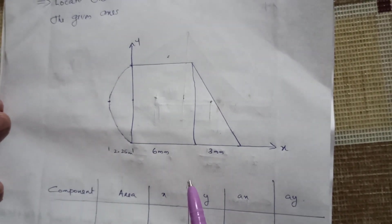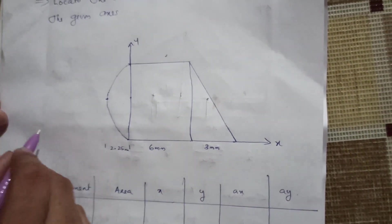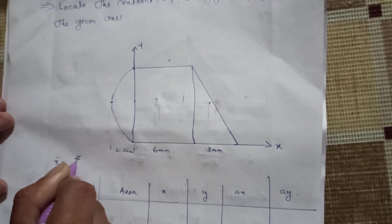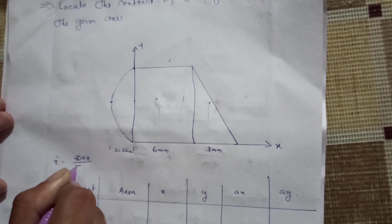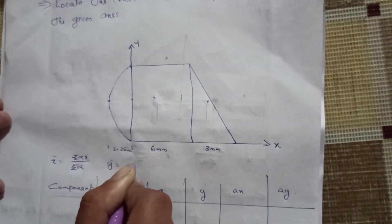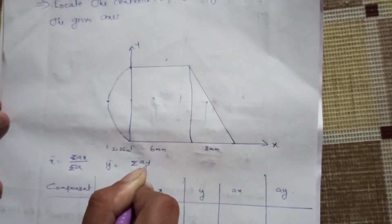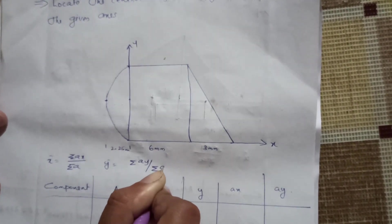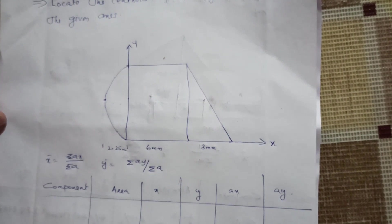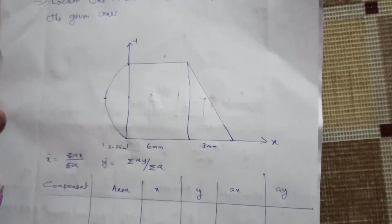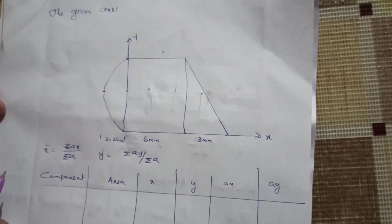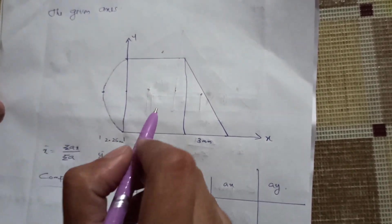We will find the centroid for this composite area. The centroid equations are: x̄ = ΣAx / ΣA, and ȳ = ΣAy / ΣA. We apply these equations to the composite area, dividing by the total area for each shape.